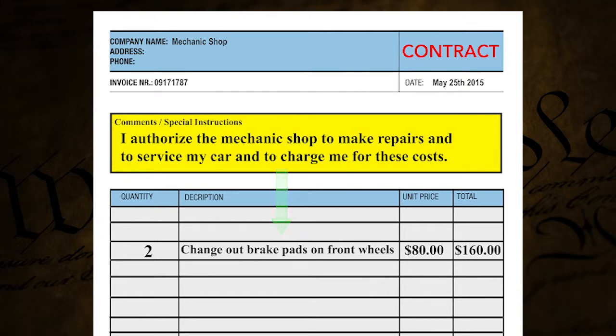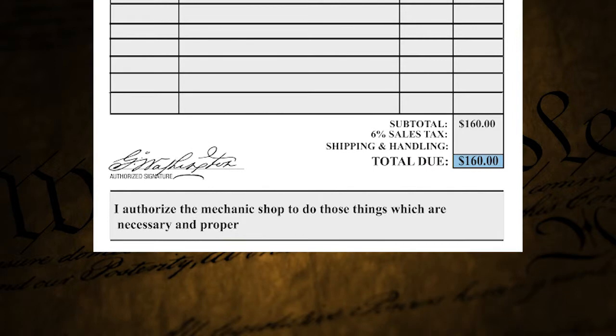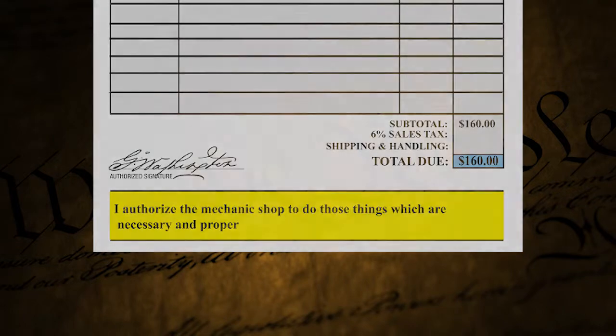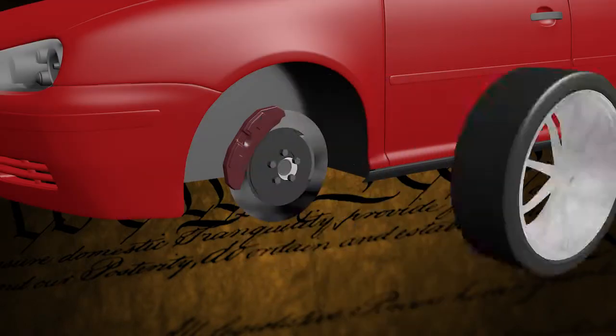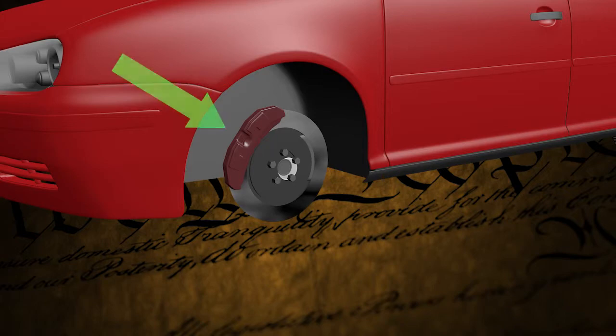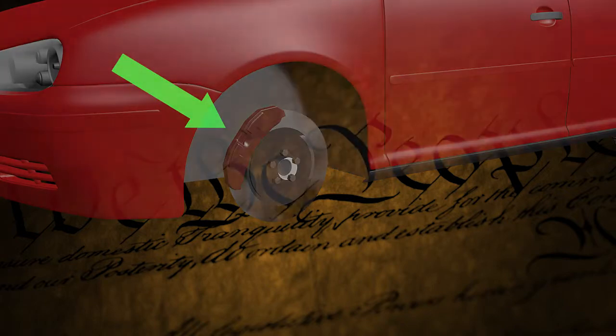And he says, well, how about we go to the bottom this time? Let's look at the bottom. And the bottom says: I authorize the mechanic shop to do those things which are necessary and proper. Sir, if I'm going to change out your brake pads, I've got to take your wheel out. It's necessary — it's proper that I do that in order to change out your brakes. And so you put your tail sheepishly between your legs and walk out like, oh, okay, that makes sense. You're right.